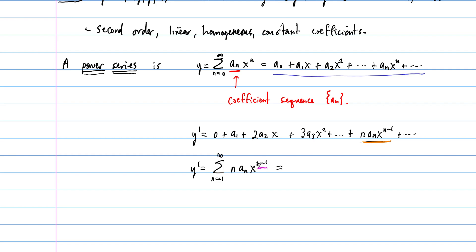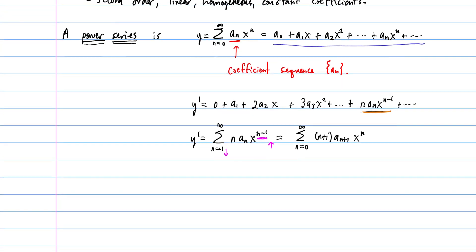Because the exponent is n minus 1, we can re-index to make it just n. Shifting the index up by 1 means the summand coefficients shift, and the lower limit goes from 1 down to 0. This gives the equivalent form: the sum from n equals 0 to infinity of (n+1)·a sub n+1·x to the n.